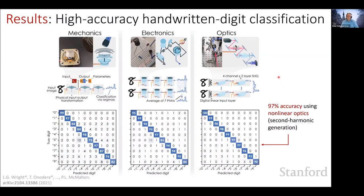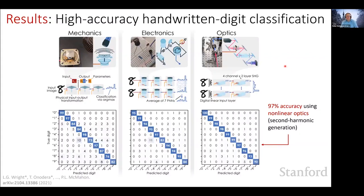These three demonstrations show the basic concept: we can take physical systems not carefully designed for machine learning and convert them into things that actually perform machine learning. If anyone has questions at any time, please feel free to interrupt.